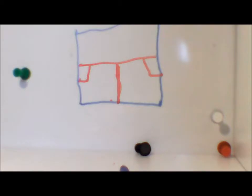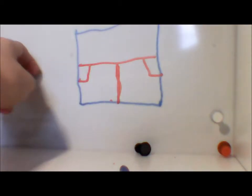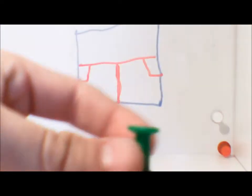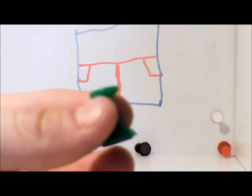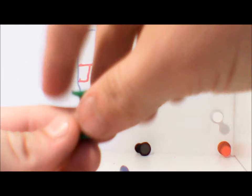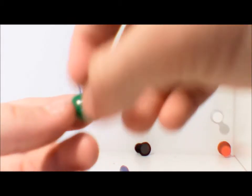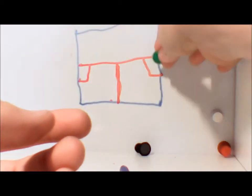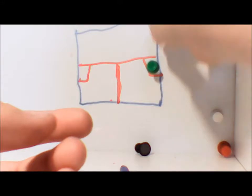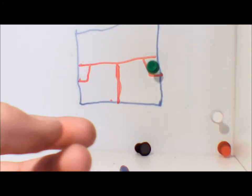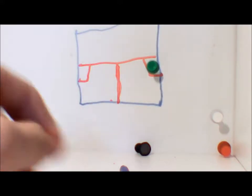So the first rule of serving is that the person who is serving, which in this case will be this green magnet, has to have at least one foot. The magnet doesn't have feet obviously so we're just going to put the magnet inside the box. The server has to have at least one full foot inside the box. If it's half foot it's not enough, it has to be the full foot in the box.